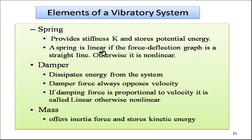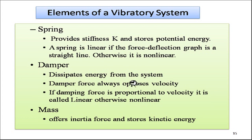A spring is linear if its force-deflection graph is a straight line; otherwise it is non-linear. In this course, we consider linear springs. The second element is the damper, which dissipates energy from the system. The damper force always opposes velocity; if damping force is proportional to velocity, it is linear — which is what we assume in this course.